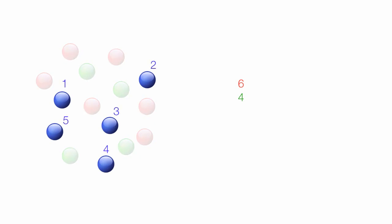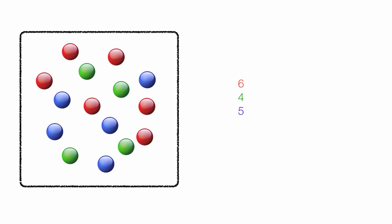There are one, two, three, four, five blue marbles. So if I add them all up together, I have 15 total marbles — six red, four green, and five blue for a total of 15 marbles.